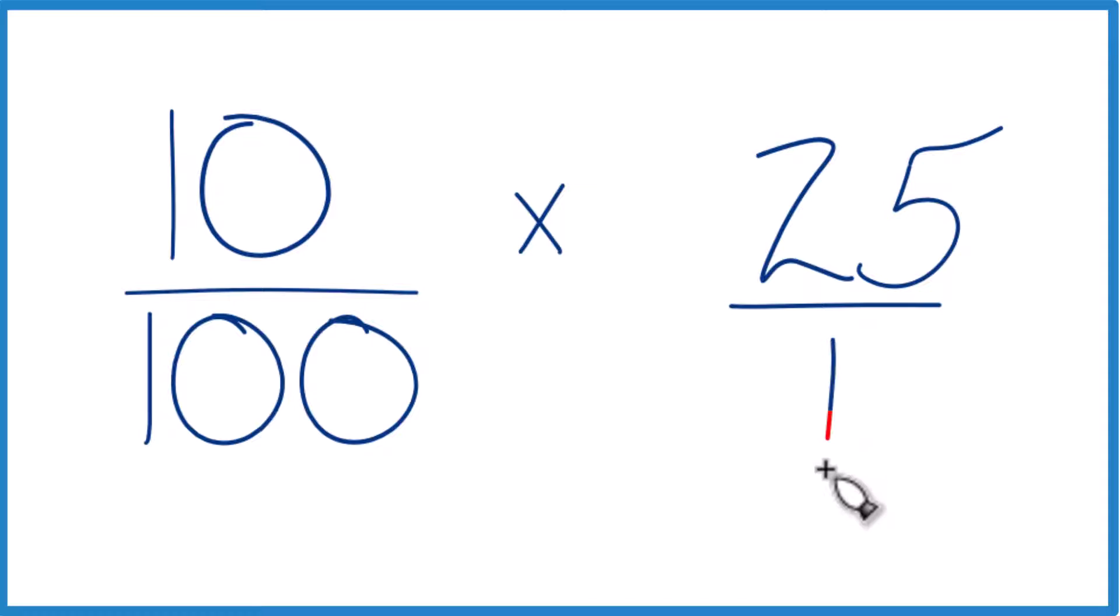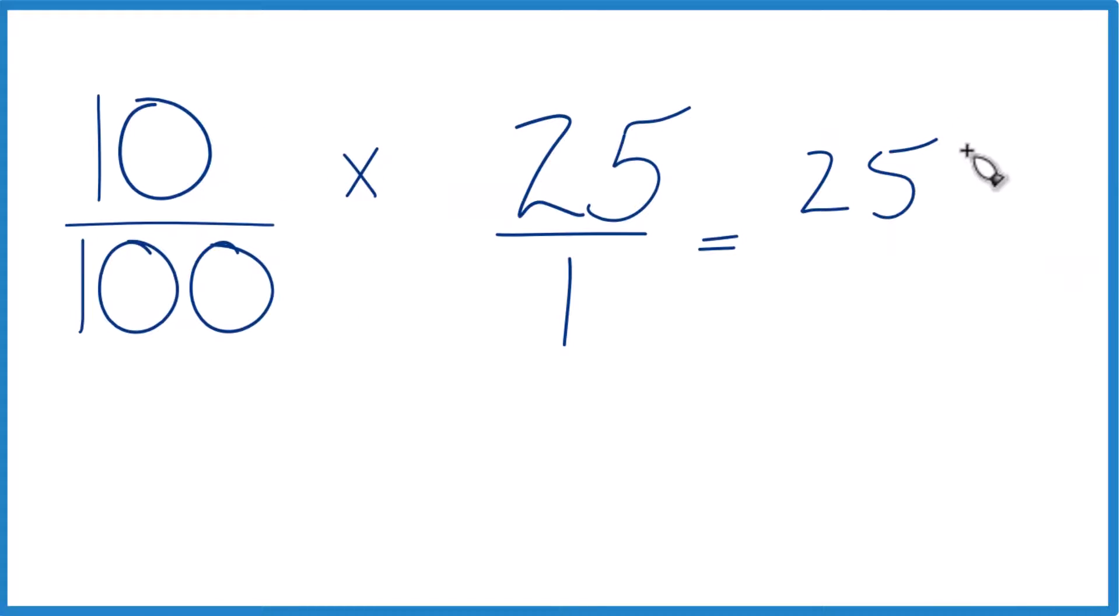You can think of this as 25 over 1. It's the same thing. But now when we multiply 10 times 25, that's 250. And 100 times 1 is 100.